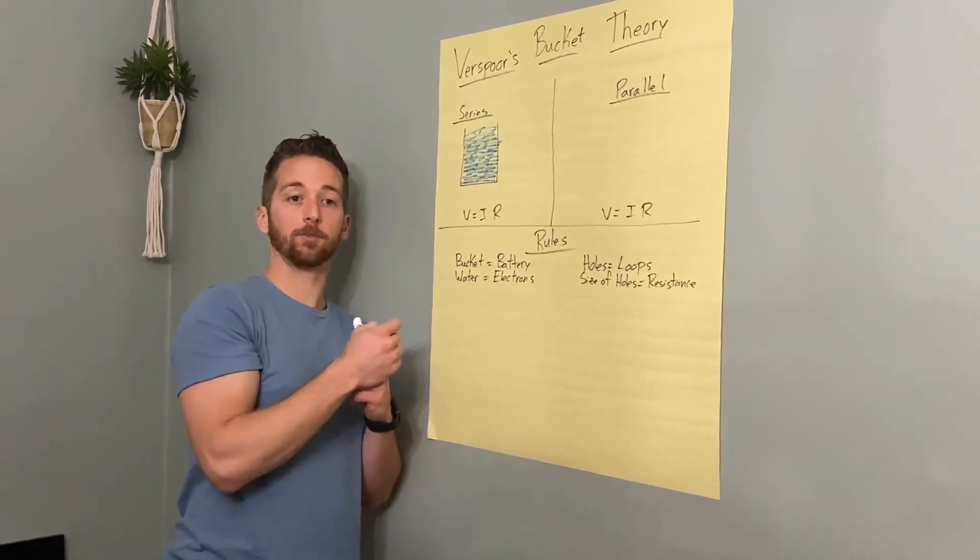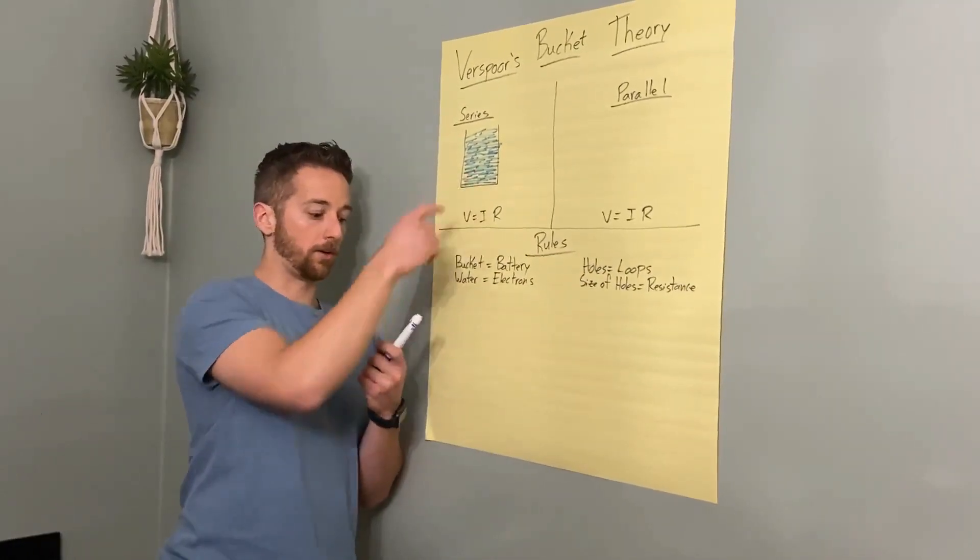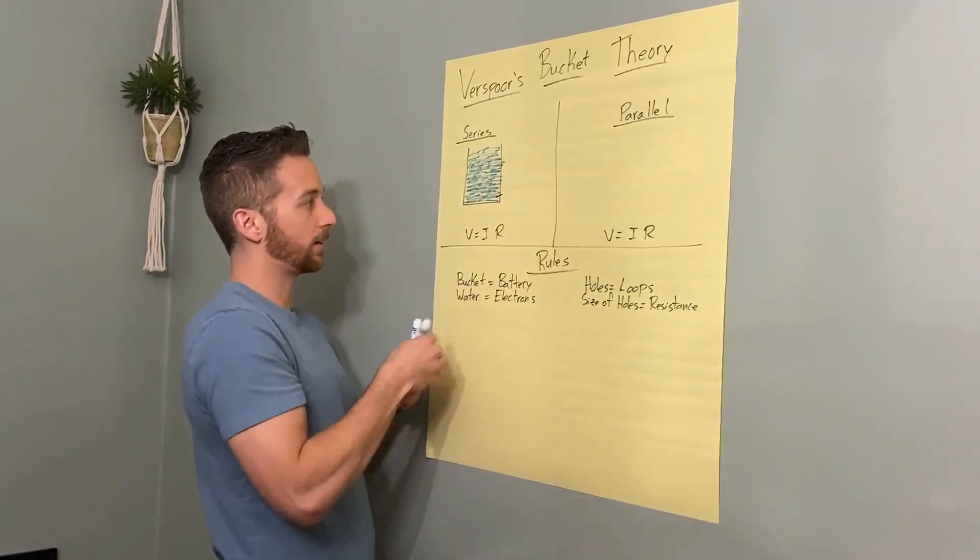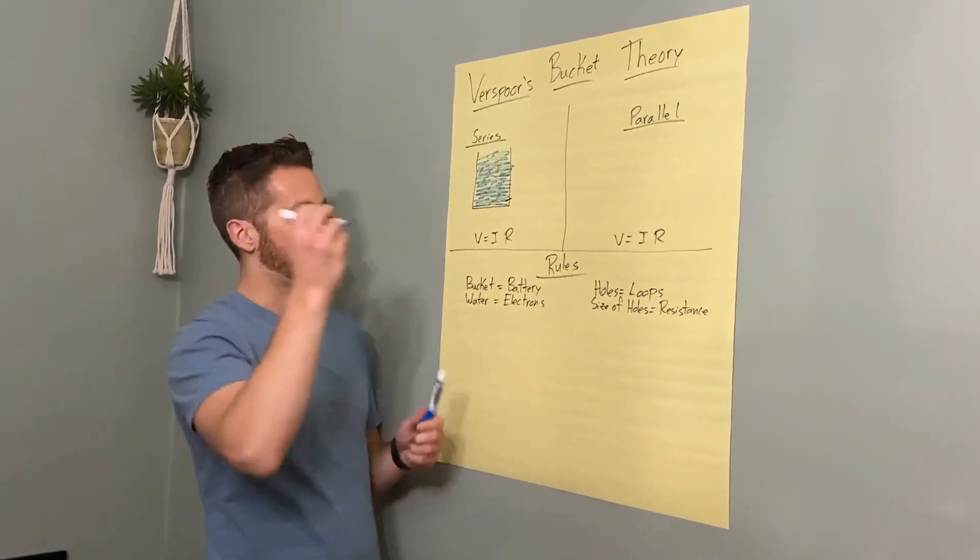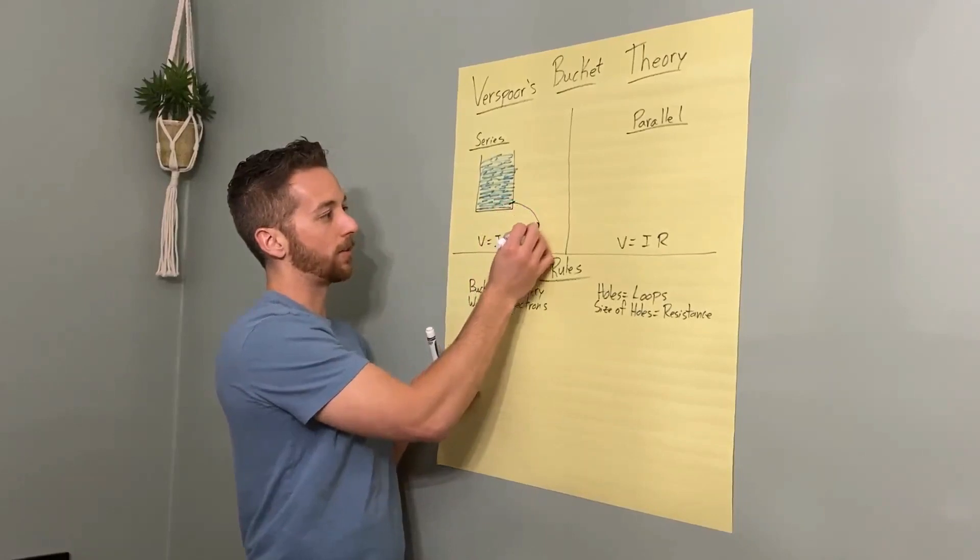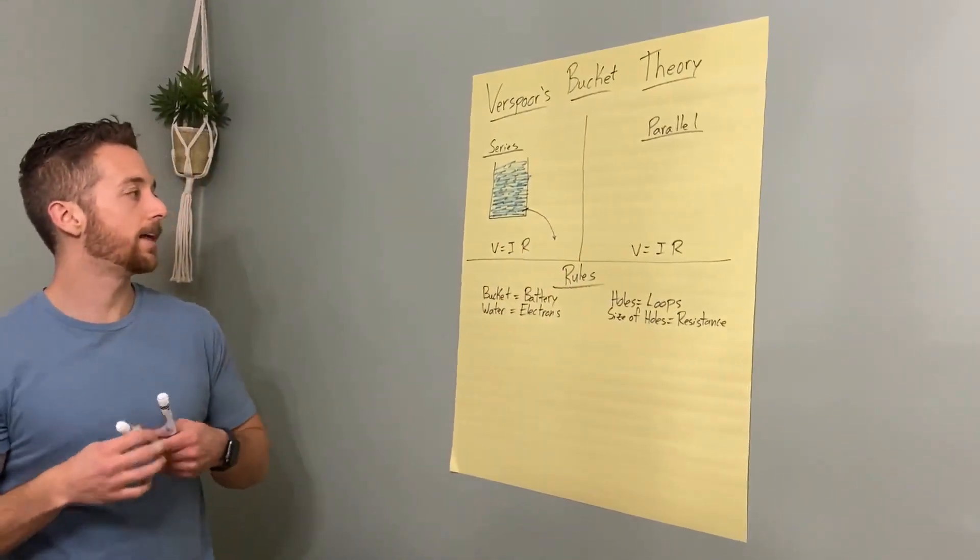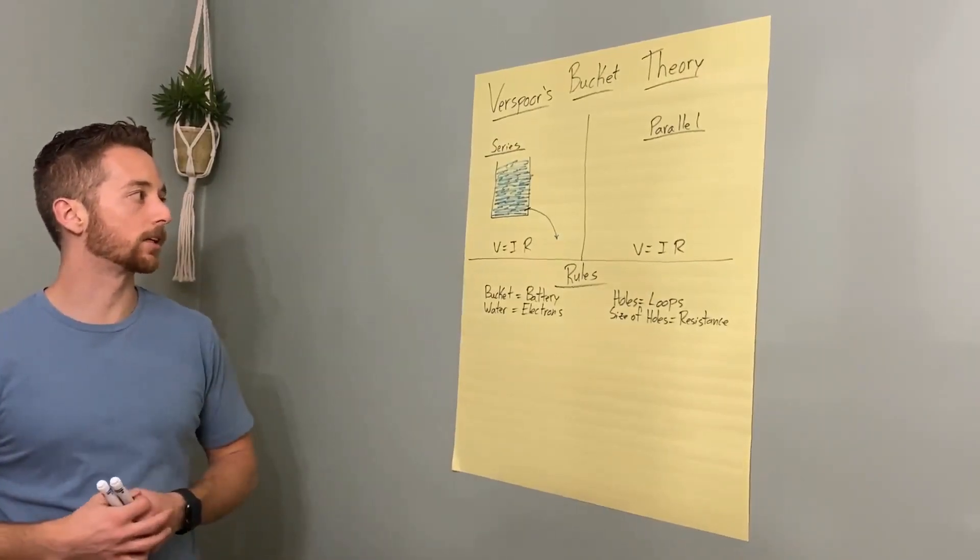In a bucket, for the water to move, you need a hole. So let's say we punch a little hole in the side, right there. What's going to happen? You bet it, that water's going to go flying out. And if we have one hole in the bucket and the water goes flying out, that means we have a series circuit.